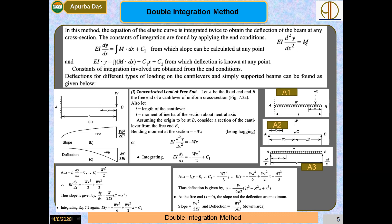Integrating once: EI · dy/dx = ∫M dx + C₁, where C₁ is the integration constant. Integrating again: EI · y = ∬M dx + C₁x + C₂, where C₁ and C₂ are integration constants. The deflection for various beam types is obtained by applying boundary conditions to these two equations.